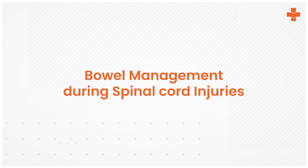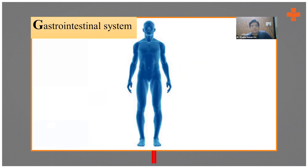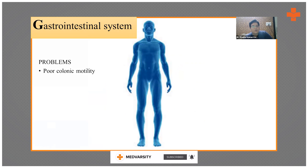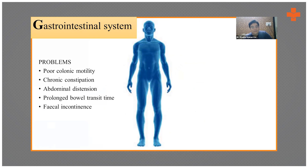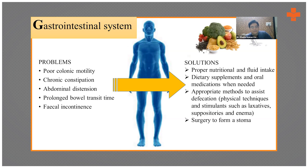Next we talk about GIT — what effects can the long-term spinal cord injured patient have on the GIT system. You can have problems like poor colonic motility, so fecal stasis occurs, which leads to chronic constipation and ultimately abdominal distension. Prolonged bowel transit time occurs because of poor motility, and fecal incontinence can be another issue — spontaneous leakage of fecal matter. Fecalites can form, which can lead to autonomic dysreflexia if the T6 level or above is affected.